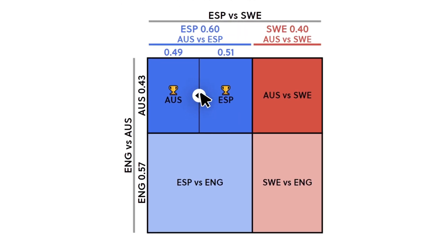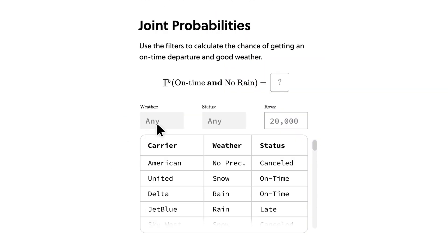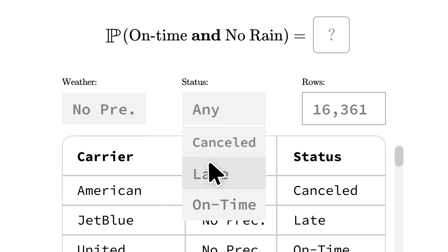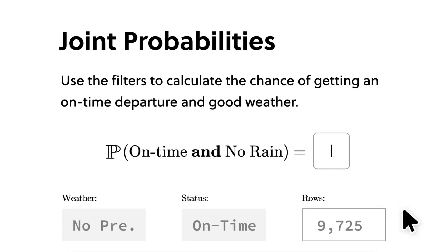Take probability and statistics for example. Brilliant's approach is all about hands-on problem solving. You're not just memorizing formulas, you're actually applying them step by step. It makes complex concepts way more intuitive and way more fun to explore.